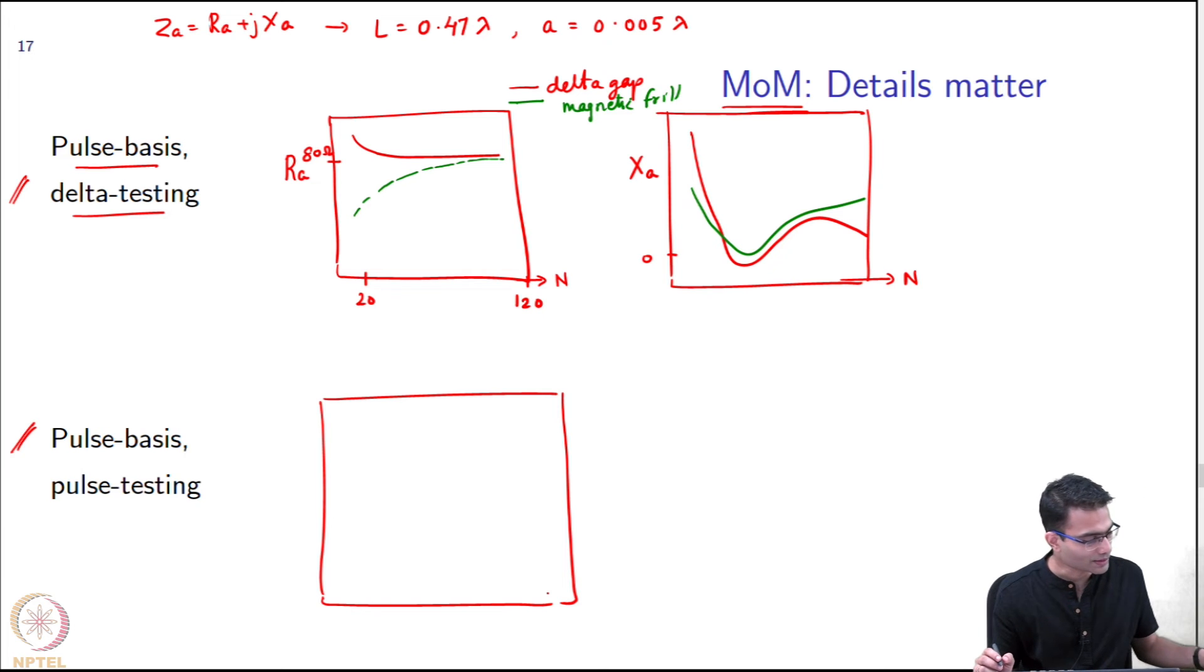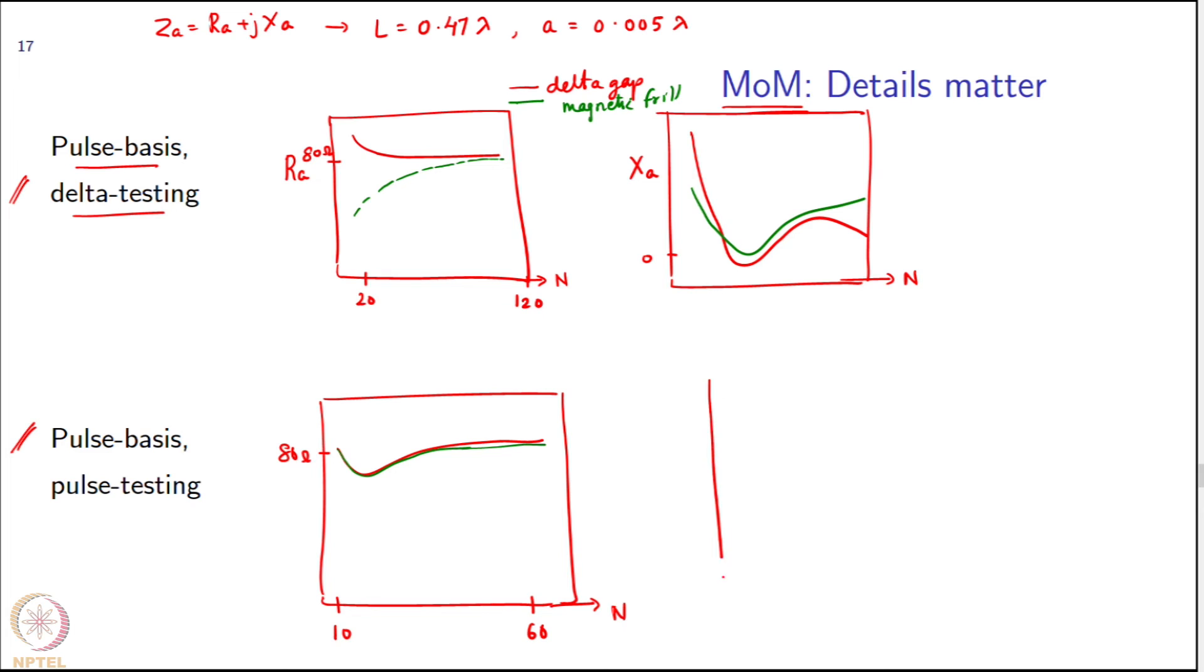What kind of results do I get over here? Again this is my figure around 80 ohms. This is what you get with the delta gap, around 60 segments and 10. What do you get with the magnetic frill? The more interesting thing happens when I look at the reactive part. This is R_A and here is X_A, again 60 and 10, and this is about zero. That is what you get with a delta excitation, and with a magnetic frill what you get is similar.